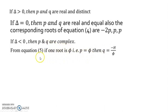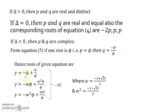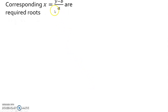From the quadratic, φ = p is found, and q = -h/φ. So y = φ - h/φ, and the other two roots are y = ωφ + ω²h/φ and y = ω²φ + ωh/φ, where ω = (-1 + √3·i)/2. Then x = (y - b)/a gives the final roots.